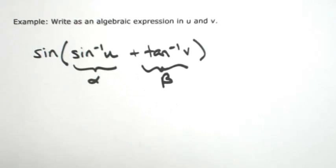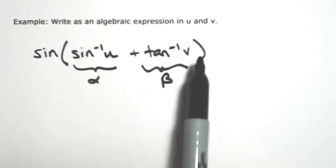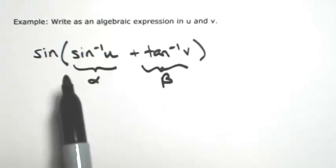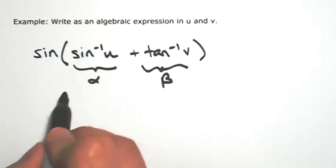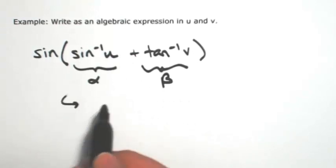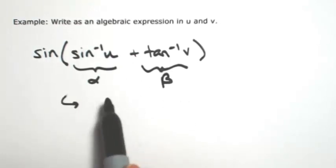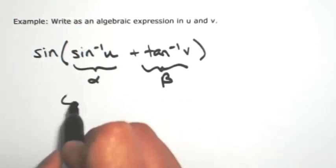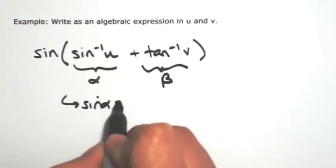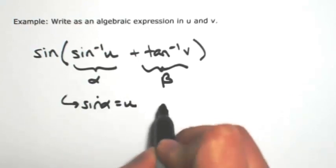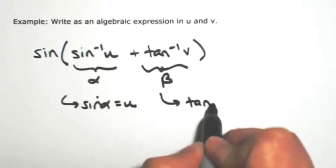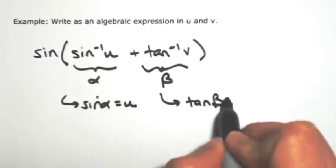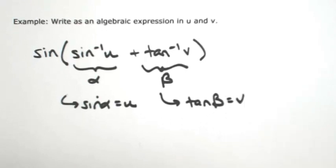At this point, again assuming that u and v are in the domain of inverse sine and inverse tangent, by the definitions of inverses, for alpha the sine of alpha would be u, and the tangent of beta would be v.